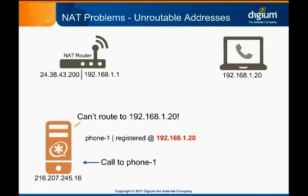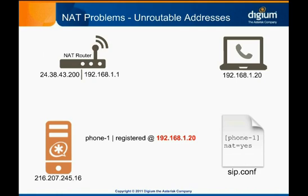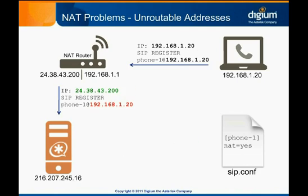As we mentioned in the SIP overview module, there are solutions outside Asterisk that attempt to address the same problem. It's worth checking the settings on your firewall device to see if it's capable of stateful packet inspection or is considered SIP aware. If so, you may be able to solve the problem without modifying Asterisk. But Asterisk has its own solution: we can configure the SIP peer with the option NAT equals yes. When set, Asterisk will ignore the address in the SIP headers and instead will store the address from the IP header, which will always be an address that Asterisk can route.